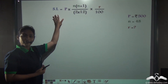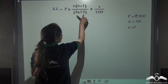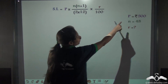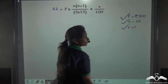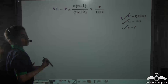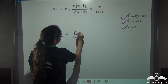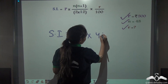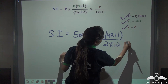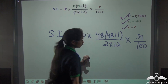Now, we know how to calculate interest on recurring deposits. The formula is: SI = P × N × (N + 1) / (2 × 12) × R/100. We know P and we know N, but we do not know R. So, we will keep R as R and write: SI = 500 × 48 × (48 + 1) / (2 × 12) × R/100.